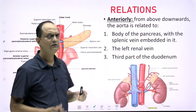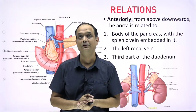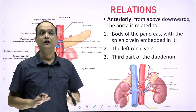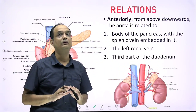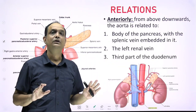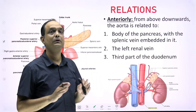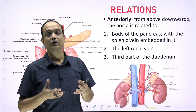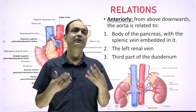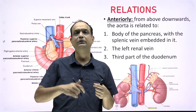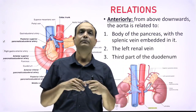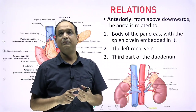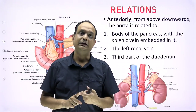Now, what are the relations of the abdominal aorta? When you open the abdominal cavity, the first thing to know is that the abdominal aorta is a retroperitoneal structure. During dissection, you must remove all the organs, empty the peritoneal cavity, and then remove the posterior abdominal wall peritoneum. Behind that peritoneum, you will find the abdominal aorta and inferior vena cava.